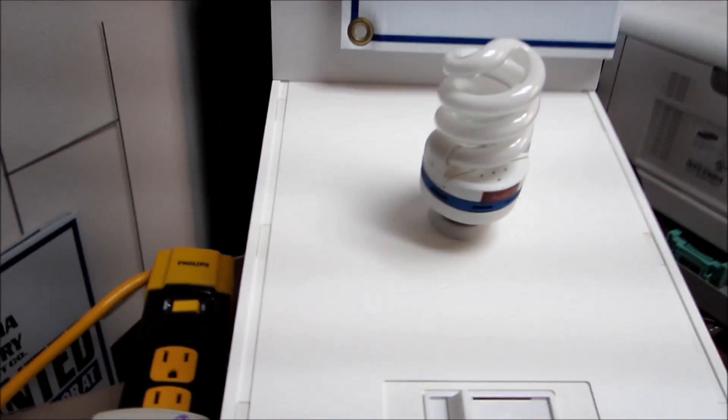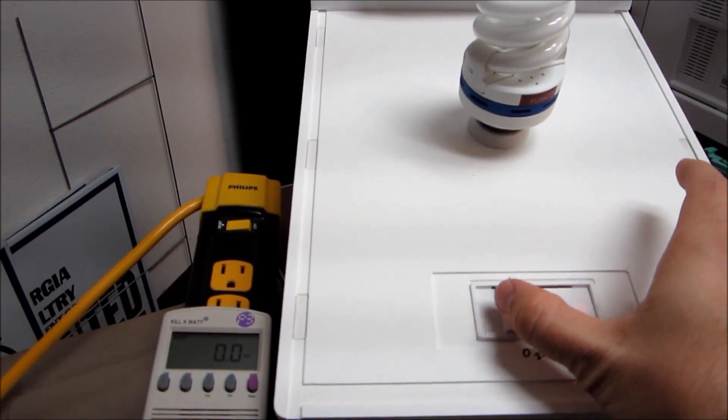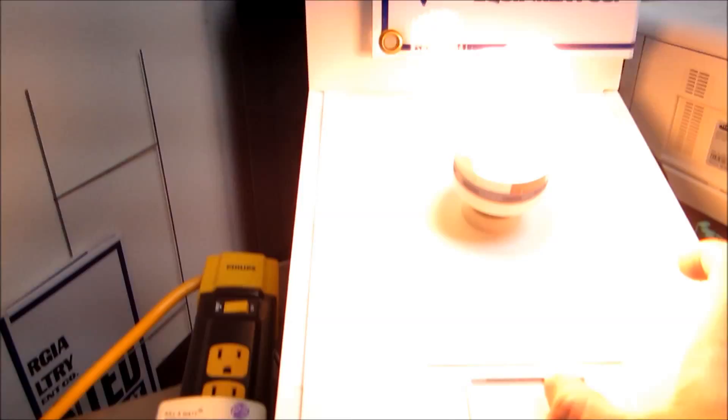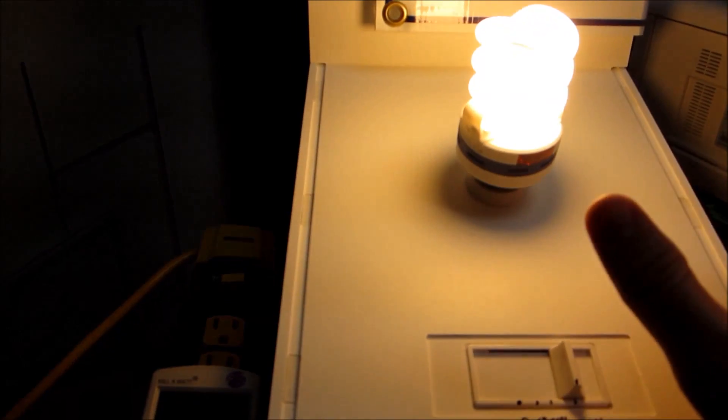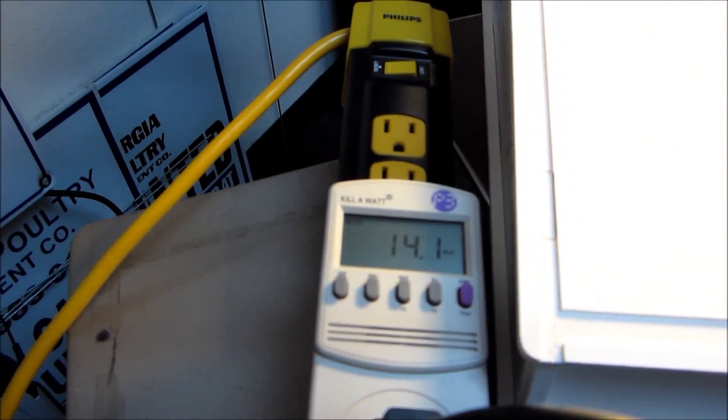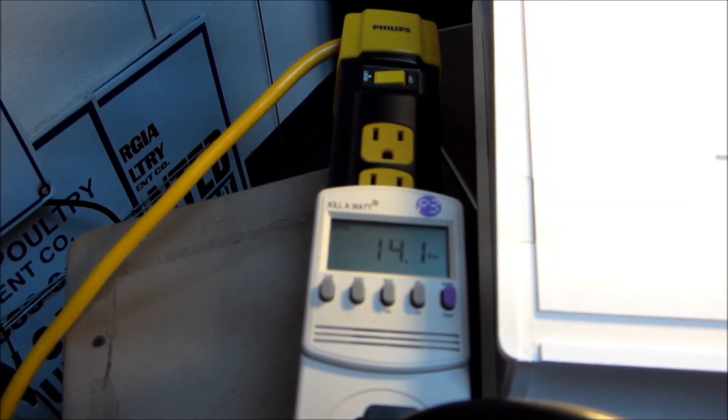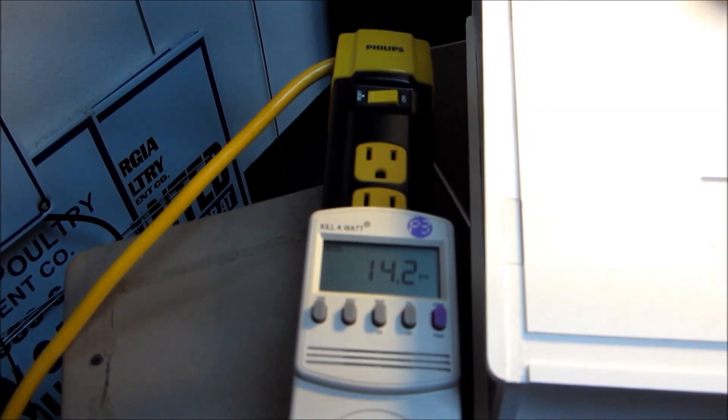Now on a dimmable CFL turned up to 100%, it takes a second to get the energy needed to crank it up because basically it is like a little starter in there. As you can see this bulb is a 15 watt bulb and right now it is using 14 watts.